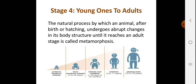Stage 4 is young ones growing into adults. Just as infants start on milk, then crawl, then stand, then walk — you have grown from a tiny baby to a 13 or 14-year-old. The natural process by which an animal, after birth or hatching, undergoes abrupt changes in body structure until it reaches the adult stage is called metamorphosis. This is a very important definition.